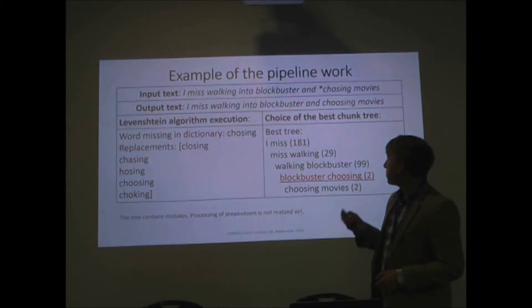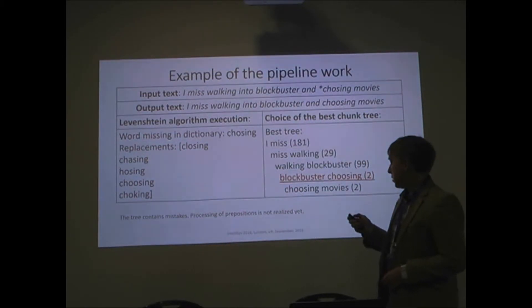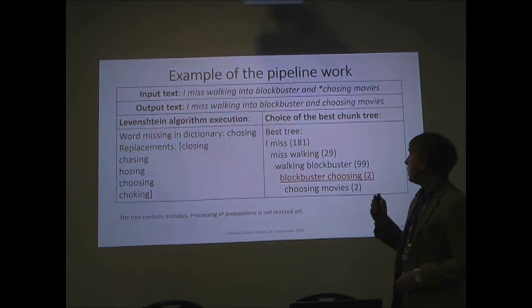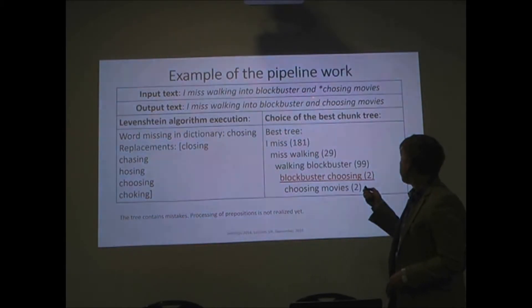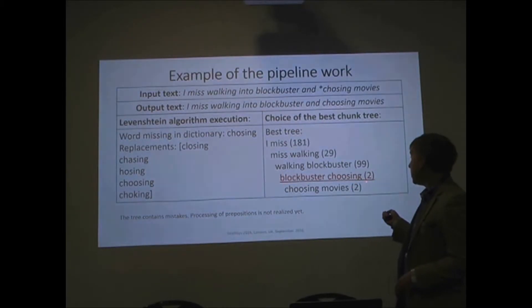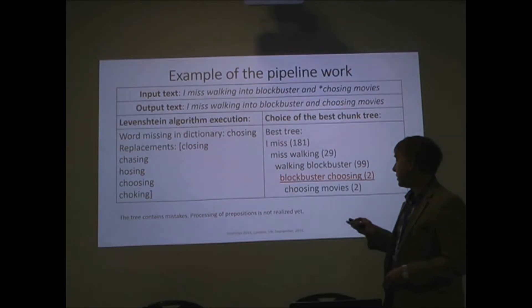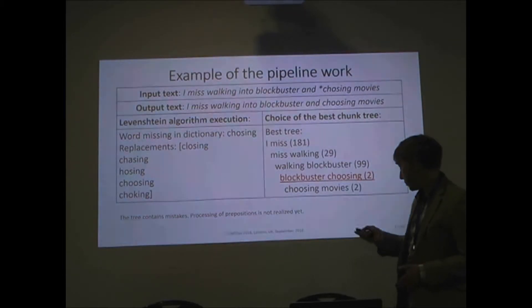On this slide you can see an example of our program's output. Here is the input text and output text. On the left side you can see the result of the Levenshtein algorithm execution — the generated word replacements for a misspelled word marked by an asterisk. On the right side you can see the best chunk tree chosen by our program. The underscored red chunk is actually a mistake, showing there are still some imperfections in our implementation.